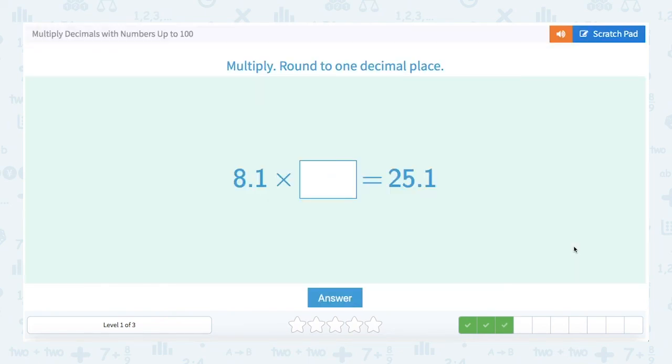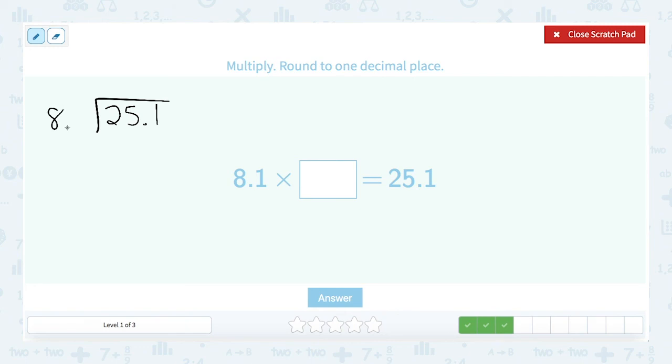Okay. This keeps giving us these problems where we know just one of the factors and we don't know the other. So we'll set it up like we did our last, 25.1 divided by 8.1. Move that decimal over 1. Move this decimal over 1. Bring the decimal up. Give ourselves a little more room. 81 does not go into 2. Doesn't go into 25. How many times does it go into 251?